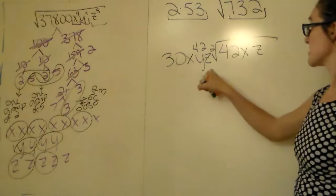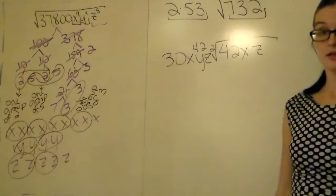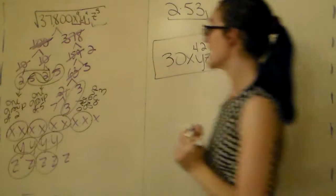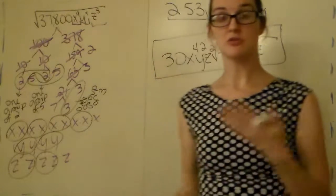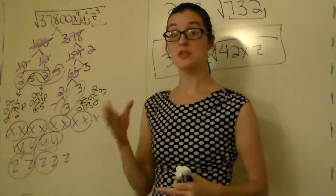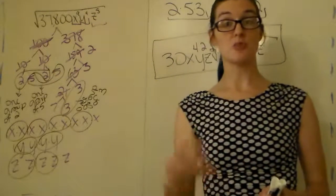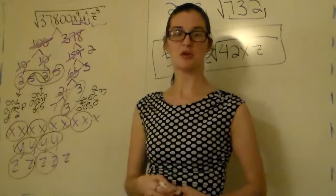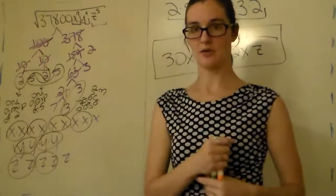That gives us 30x⁴y²z² times the square root of 42xz — that would be your simplified radical. If you had something other than a square root — if your index was larger, like a cubed root, fourth root, or fifth root — all that does is tell you how many numbers have to be in a group. For a cubed root, each group needs three of the same number; for a fifth root, five; for a seventh root, seven. Your index tells you how many pieces are in each group in order for them to go outside of the house.